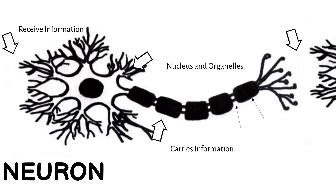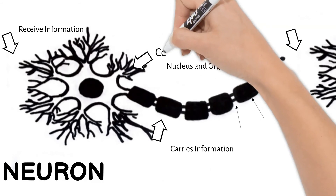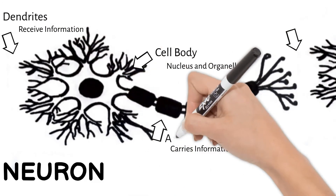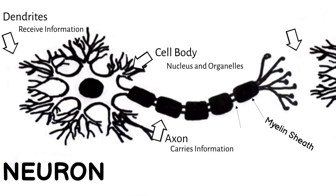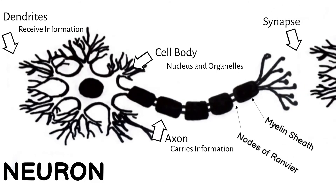In this video, we identified the neuron cell body, dendrites, axon, myelin sheath, nodes of Ranvier, and synapses. Next video, we'll look at how neurons pass messages throughout your body.